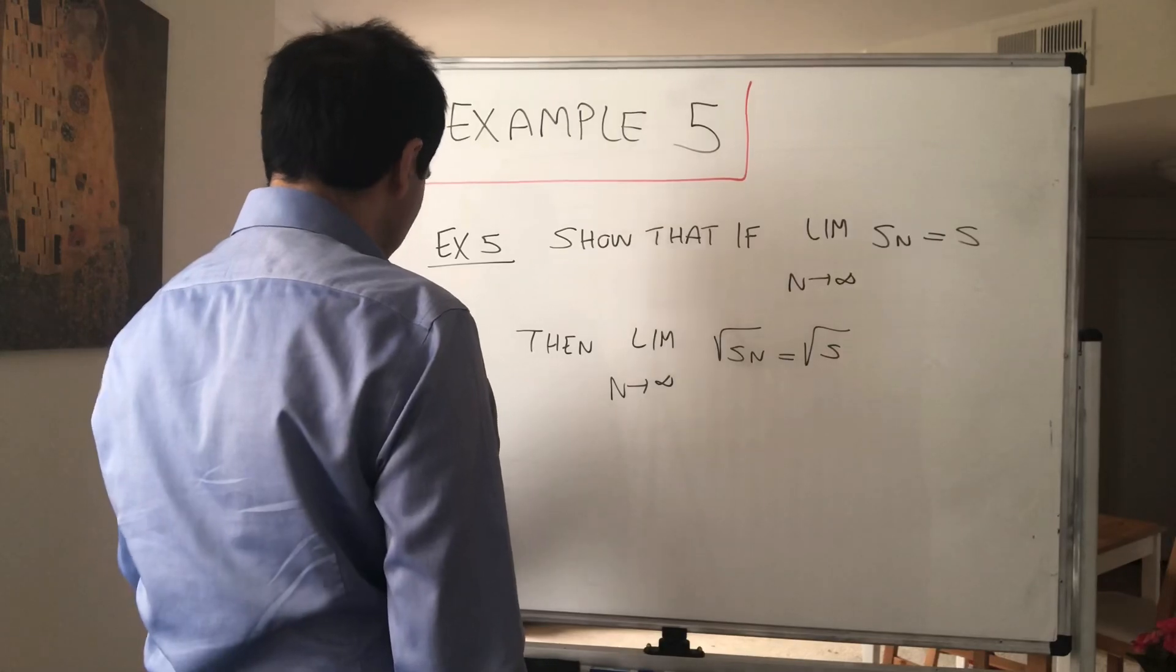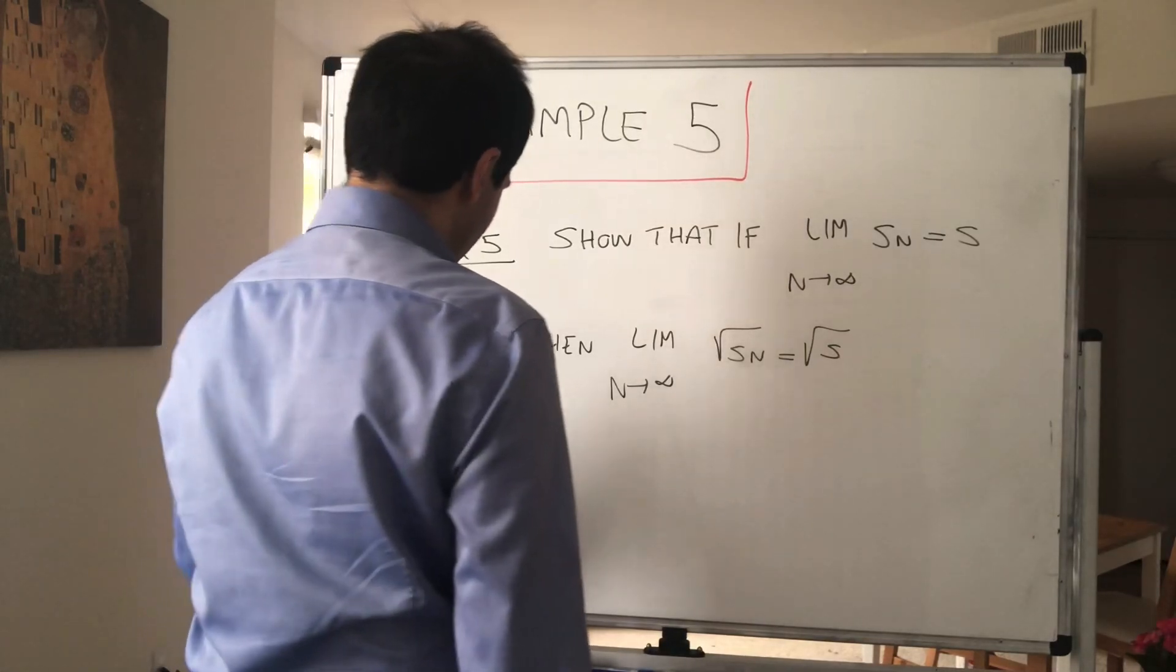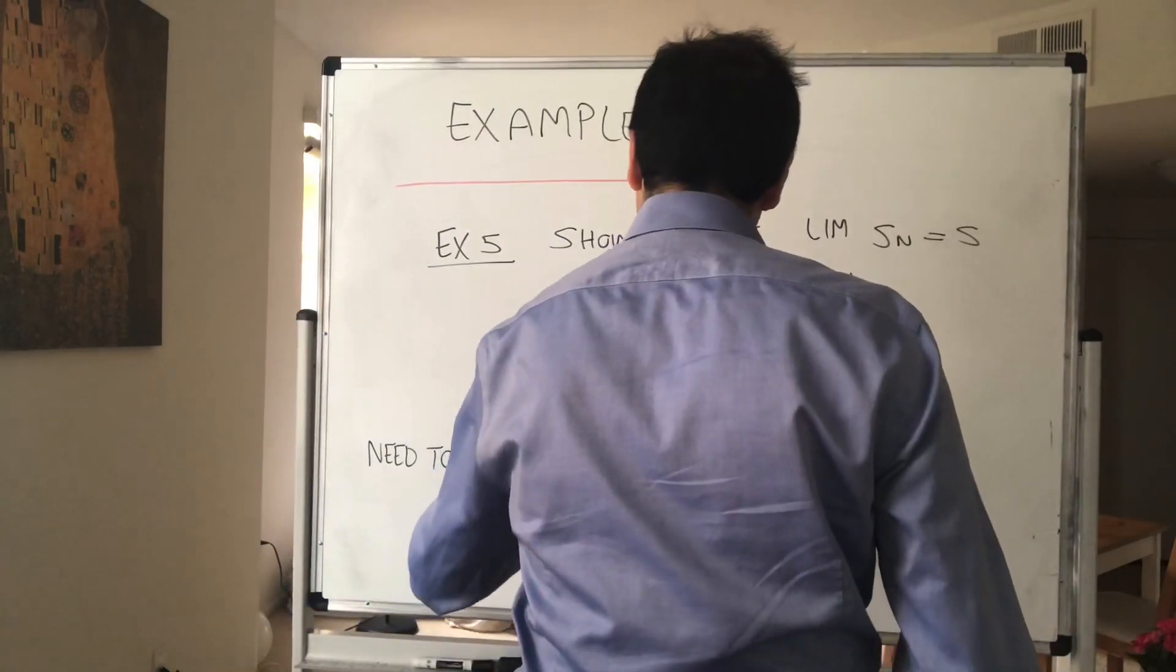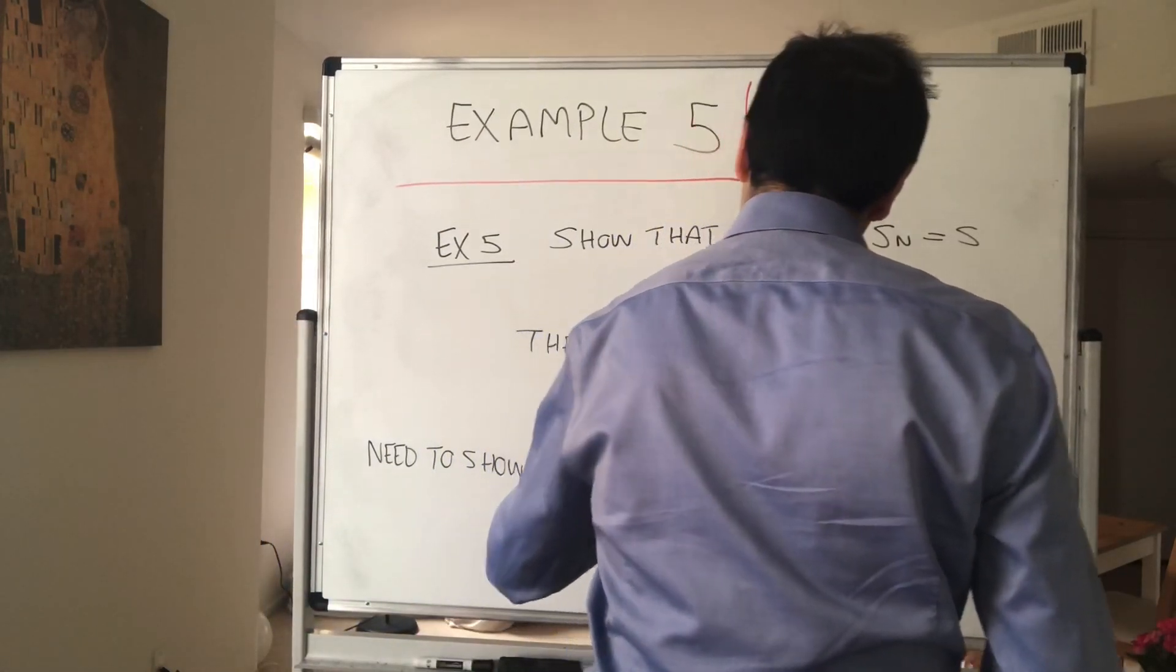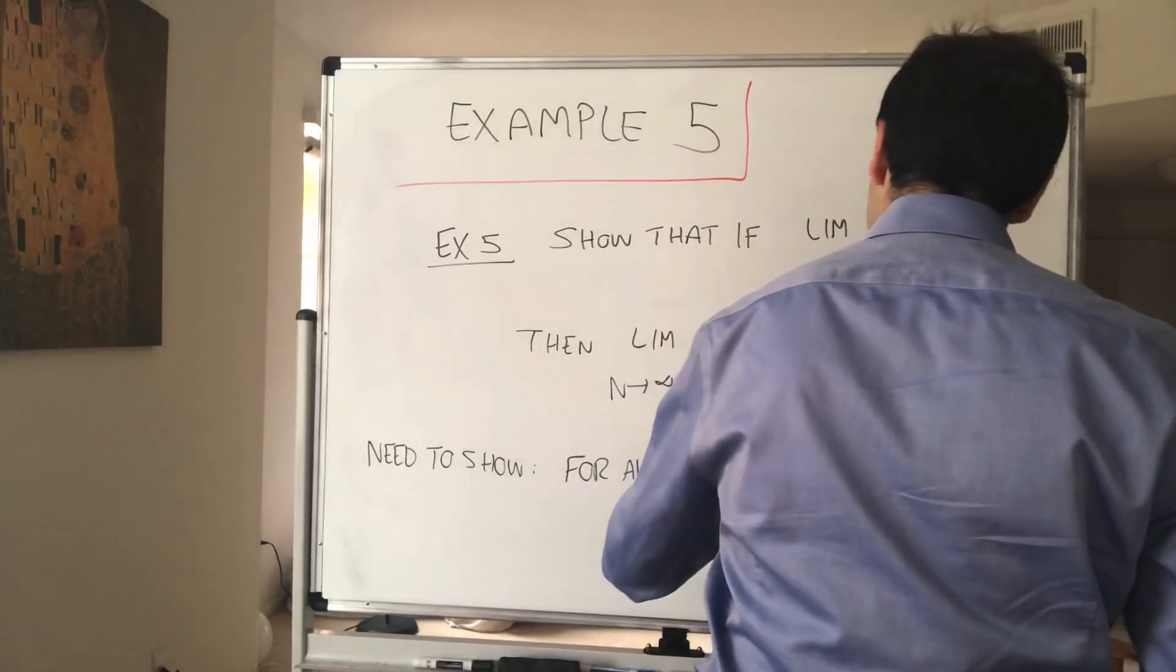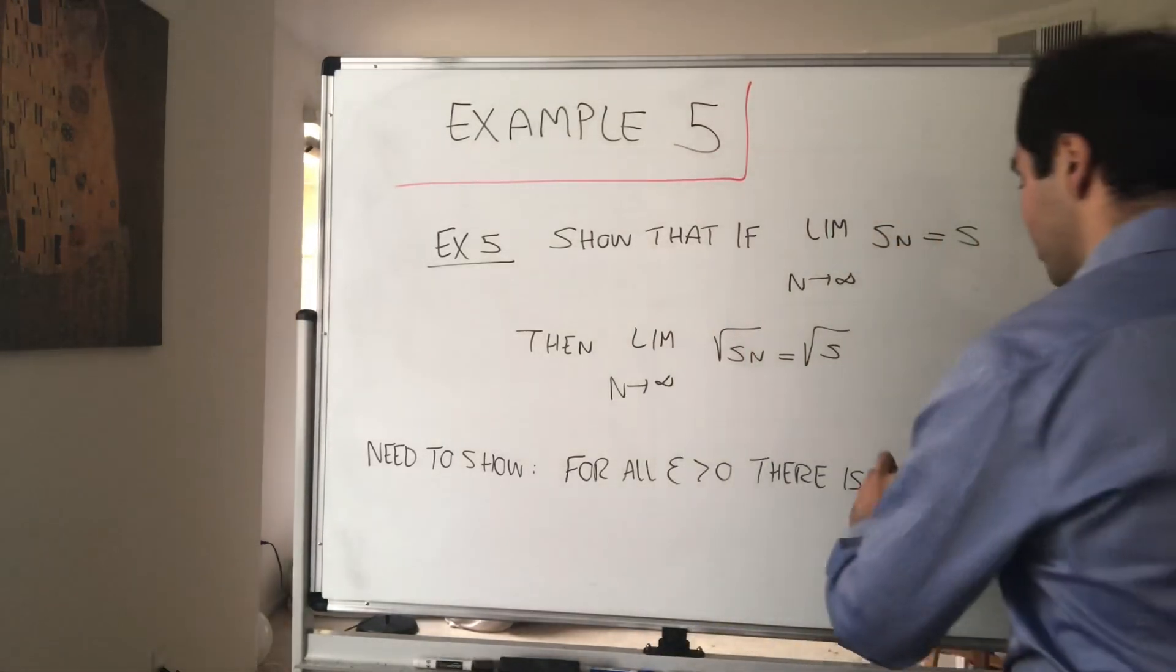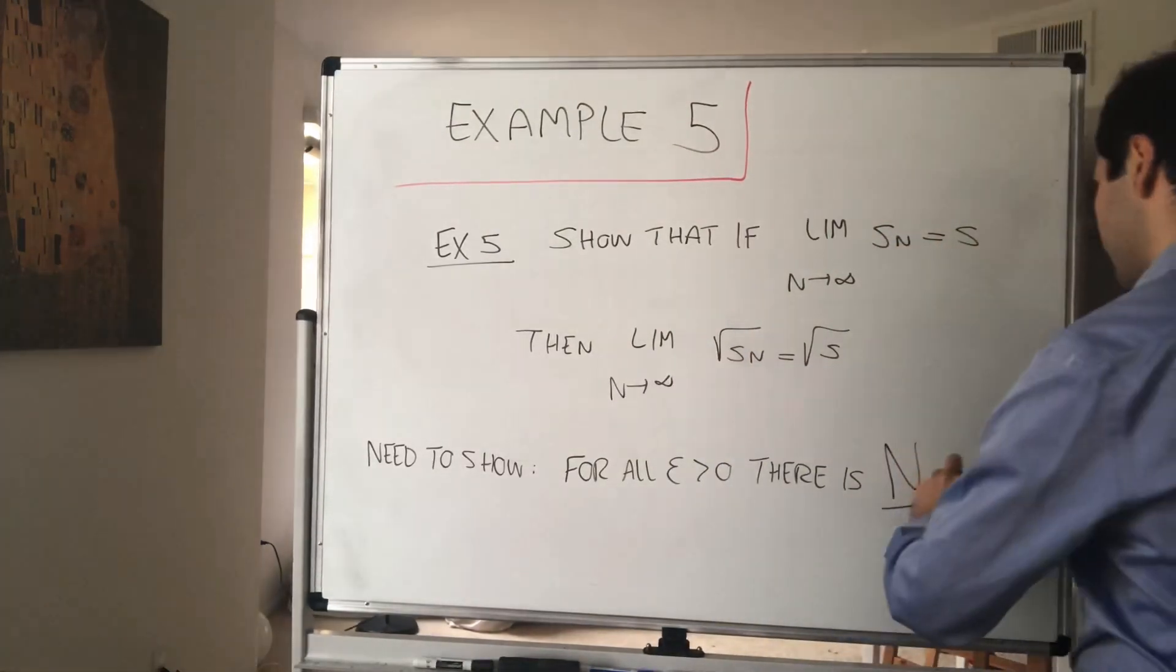We need to show that for all epsilon greater than zero, there is some capital N such that